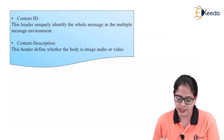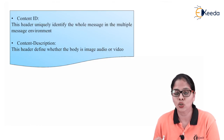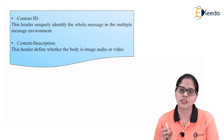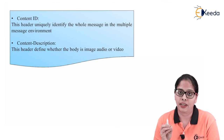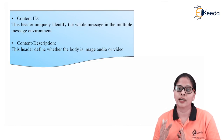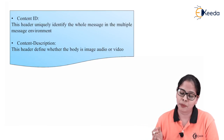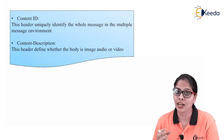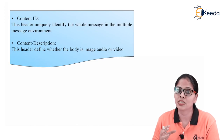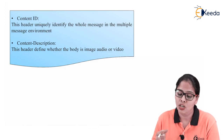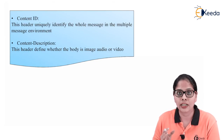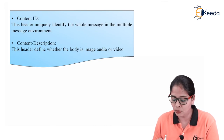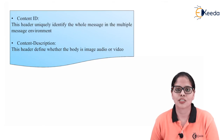Content ID uniquely identifies the whole message in a multiple message environment. For example, a single message divided into 10 packets — all 10 packets will have the same content ID, so you can identify which packet belongs to which message. Content description defines whether the body is image, audio, or video. Thank you for watching this video.